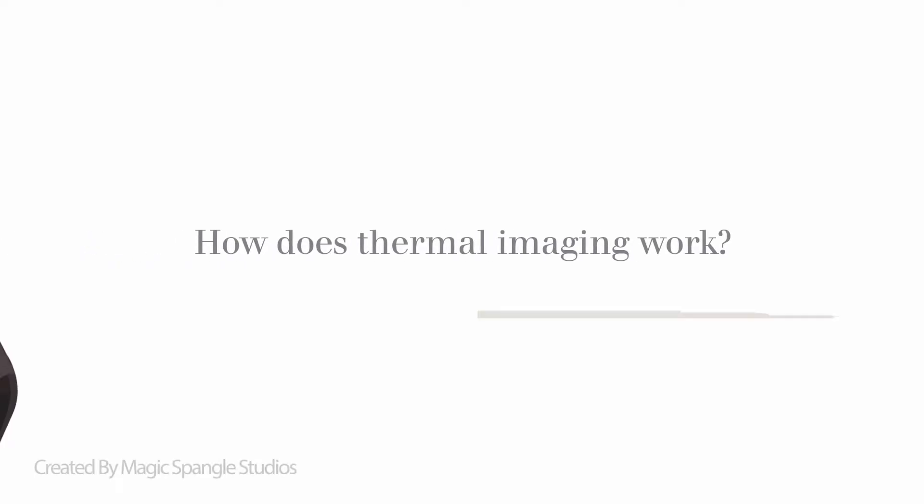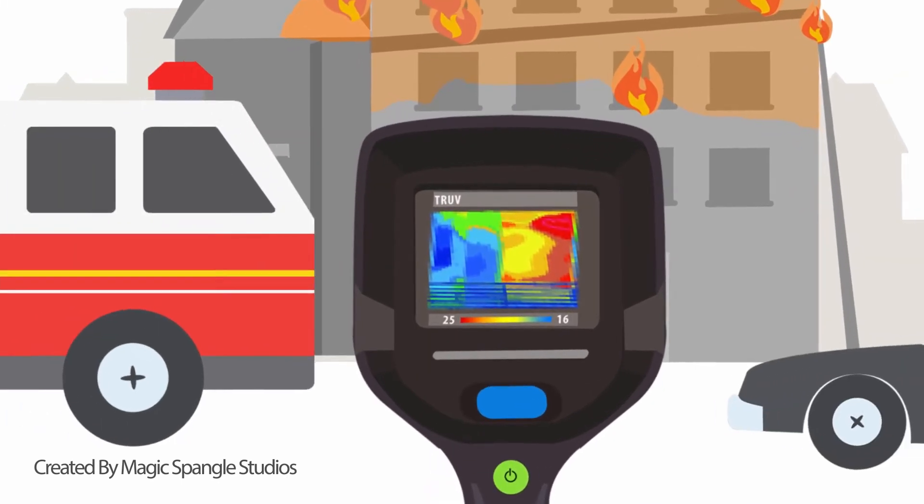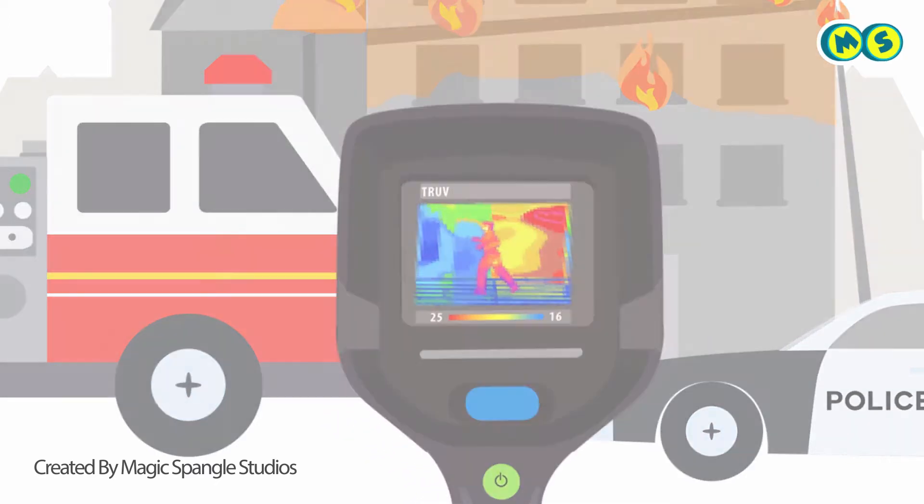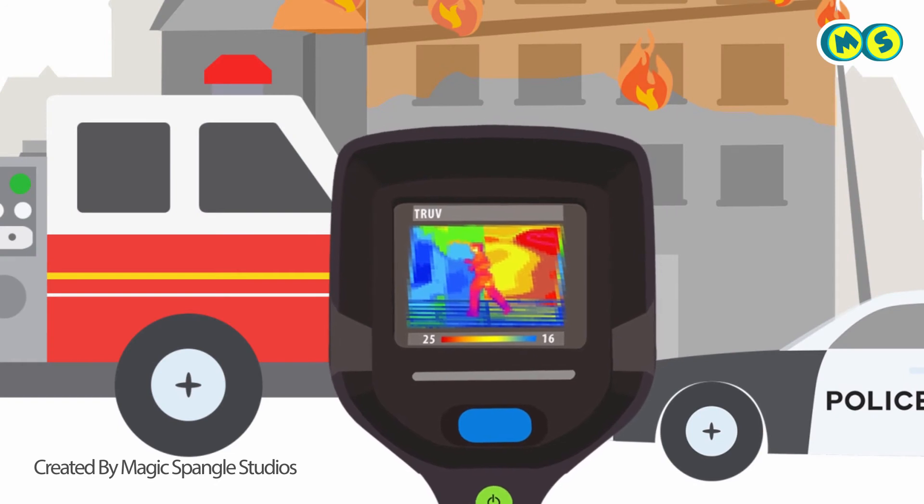How does thermal imaging work? Thermal imaging is used by firefighters and law enforcement to save lives as a result of its ability to trace body heat. But how is it possible that infrared light can be used to detect heat?